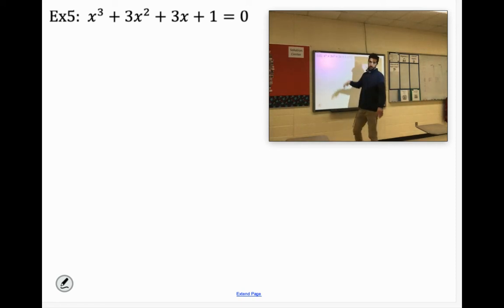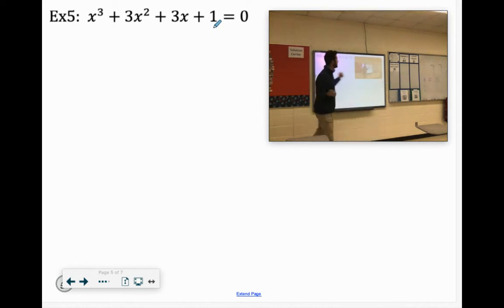All right, we have x to the third power. We're looking for three zeros. Now if we look at the back end there, we just have positive one. At the front, we also have positive one. The only factors of one are one and negative one. Great, we only have two things that we need to test.